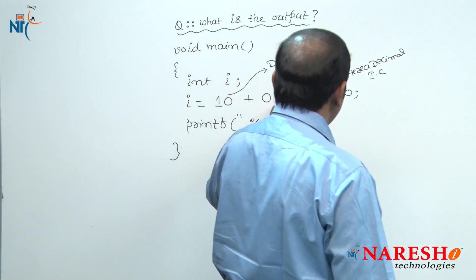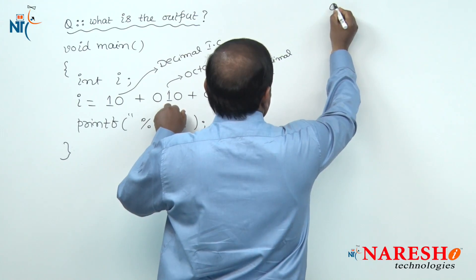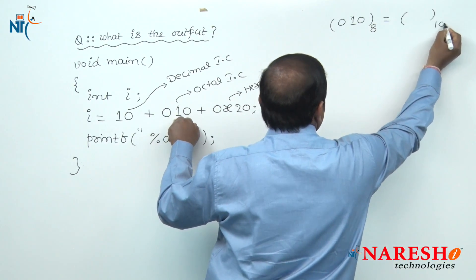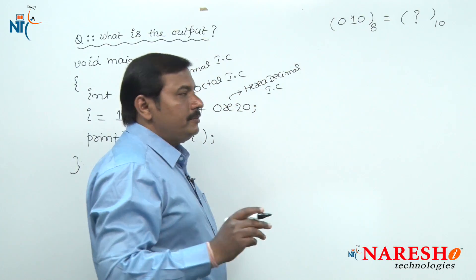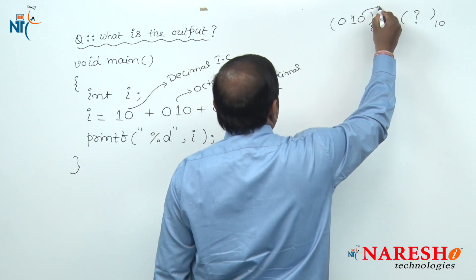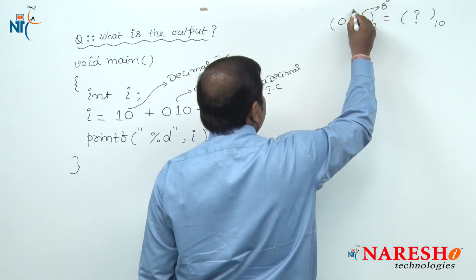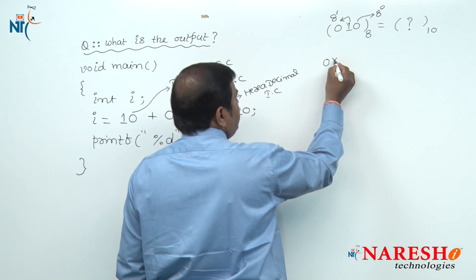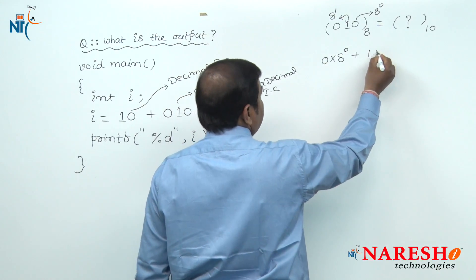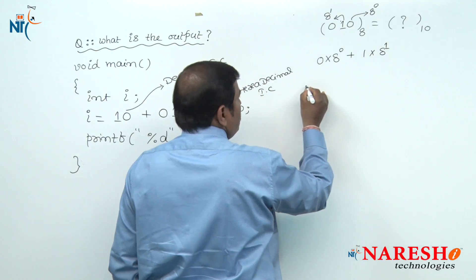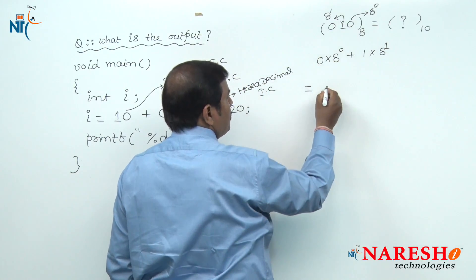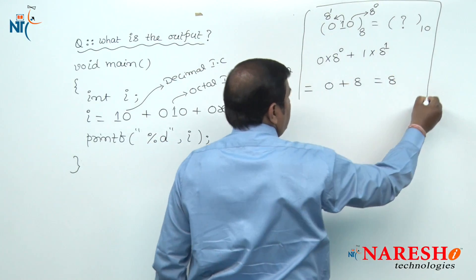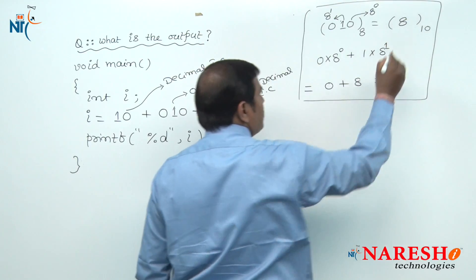Now watch the procedure of converting an octal integer constant into its corresponding decimal integer constant. In the octal system, the digit in the units place has the weight 8 power 0, and the digit in the tens place has the weight 8 power 1. Multiply each digit with its corresponding weight and finally add those values. Hence, the equivalent decimal value for this octal integer constant 010 is 8.